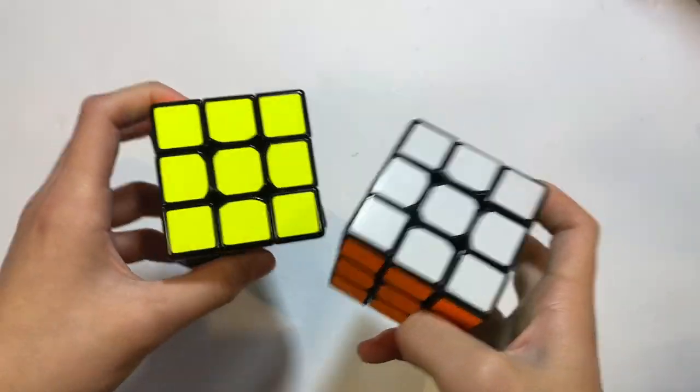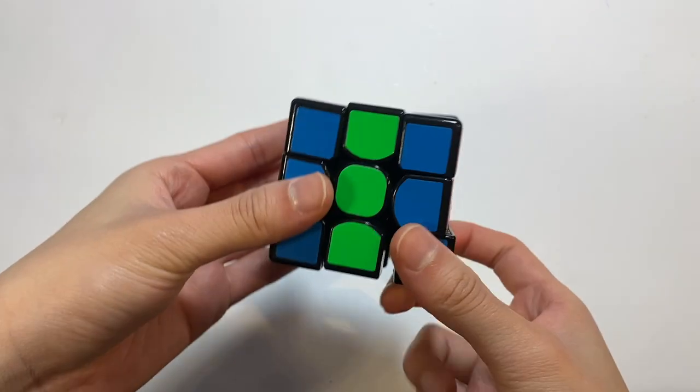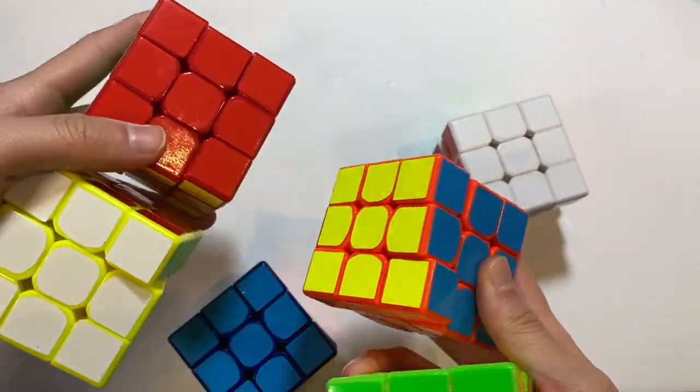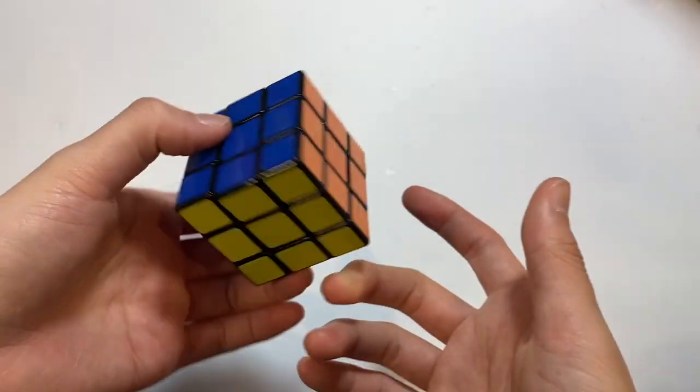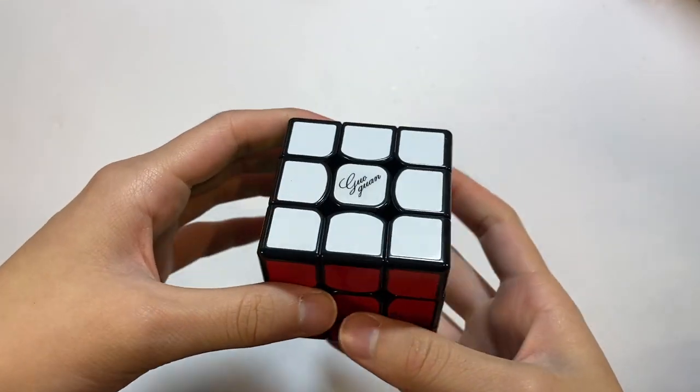Two Moiyu Tanglongs. The X-Man Tornado. The Moiyu Weilong GTS. The Guo Guan Yuexiao. Here are my force cubes. A random small cube signed by TPC. The Guo Guan Yuexiao EDM.